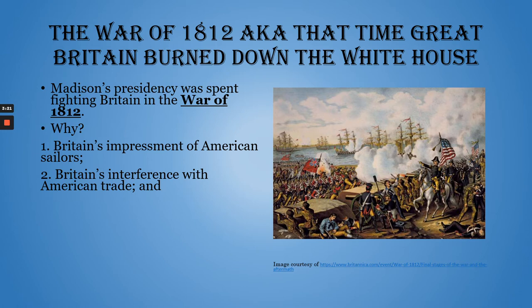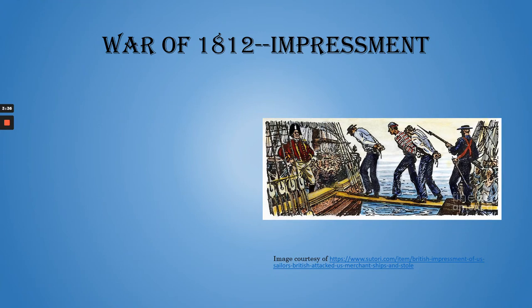Madison becomes president in 1809, but his presidency is known for the tensions with Great Britain that ultimately lead to war in 1812. So why did Britain and America go to war again in 1812? Well, one — and this is the overwhelming reason — if you polled a random person and gave them one reason the War of 1812 began, they're probably going to tell you impressment. The second is Britain's interference with American trade. And third, Britain was helping Native American revolts in the Northwest Territory. We'll talk about all three of these reasons in a little bit more detail.